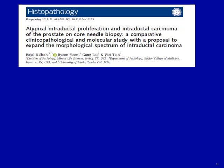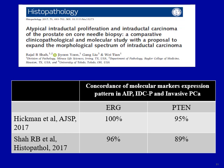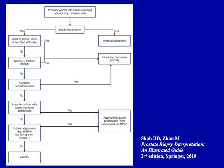We also recently showed that the molecular makeup of atypical intraductal proliferation closely mimics intraductal carcinoma. There is a high degree of ERG over-expression and PTEN loss concordance in AIP, intraductal carcinoma of the prostate, and adjacent invasive cancer, indicating that AIP is closely related to intraductal carcinoma of the prostate and is essentially a low-grade morphological spectrum of intraductal carcinoma.